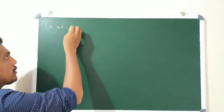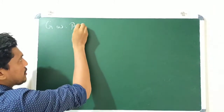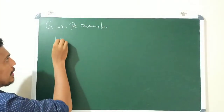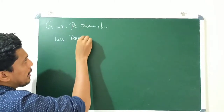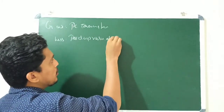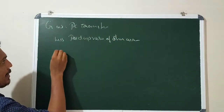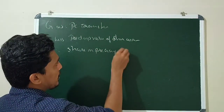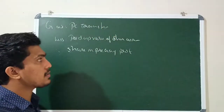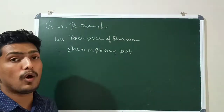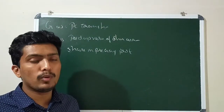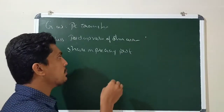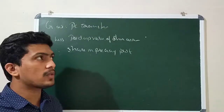We will use the second equation for goodwill calculation since P Limited acquired 70% of S Limited. The equation is: Purchase Consideration Transferred, less Paid-up Value of Shares Acquired, less Share in Pre-Acquisition Profit. The paid-up value of shares acquired from S Limited is: total shares 1,60,000 × 70% = 1,12,000. The share in pre-acquisition profit is: 60,000 × 70% = 42,000.